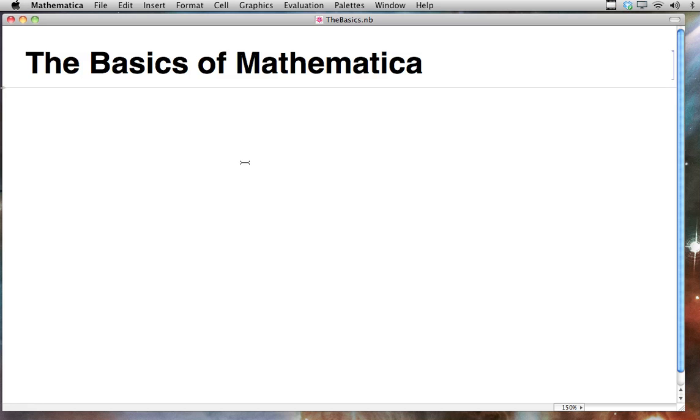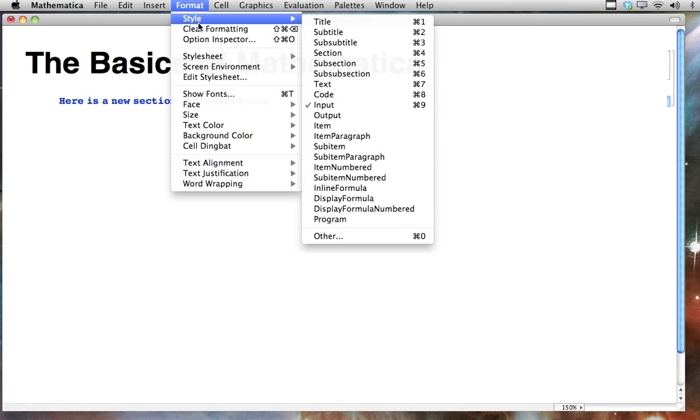And then when I start typing some text, here is a new section about shortcuts. It's in blue. The blue means it's input text. Mathematica wants to know what we want this to do. Is this text an equation? Is it a new heading? Is it a bullet point? And so we can tell Mathematica by clicking on the cell, this little bracket over here, and then going up to format, style, and let's call this a section.